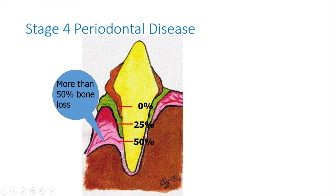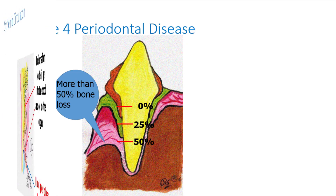In stage 4 periodontal disease, over 50% of the supporting bone is gone, so the tooth is now really wobbly and hurts your pet when it eats. Unless you are prepared for advanced procedures, most of the teeth are extracted. It is way too late to save them easily.